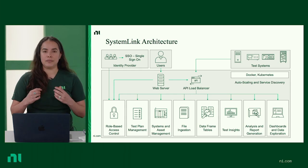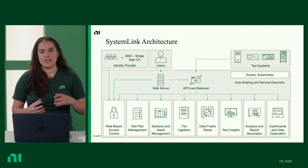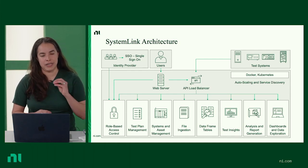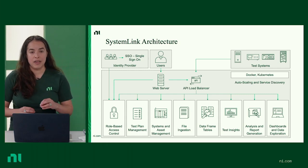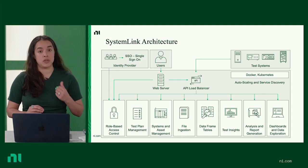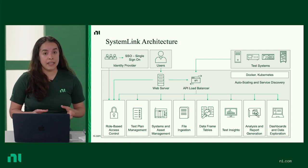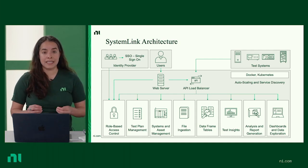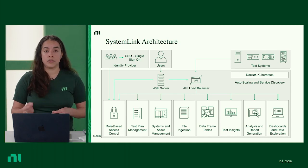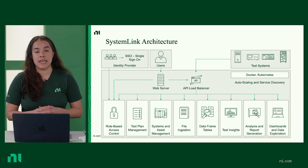The capabilities available in SystemLink start with role-based access control, which allows the right people to look at the right data based on their level. We can isolate workspaces and give privileges to systems, data, and analysis routines. You can define role and workspace access through either an OpenID Connect user claim or through direct assignment.